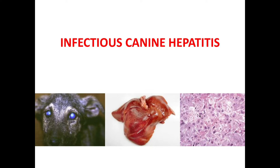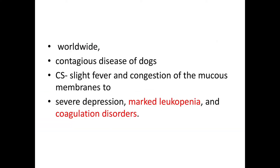Infectious canine hepatitis is a worldwide contagious disease of dogs, and the clinical signs vary from slight fever and congestion of mucous membranes to severe depression, marked leukopenia, and coagulation disorders. This disease is also seen in other canines like foxes, wolves, coyotes, etc., and other carnivores may become infected without developing clinical illness.